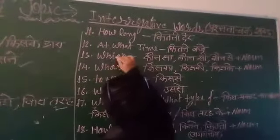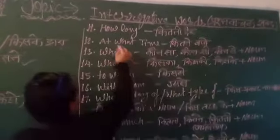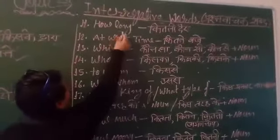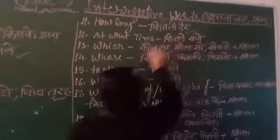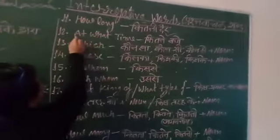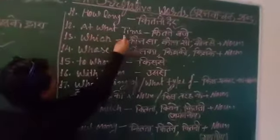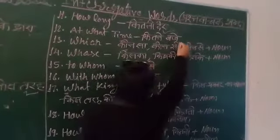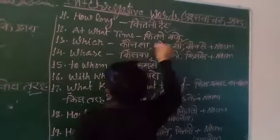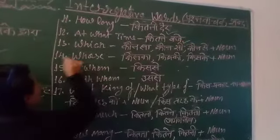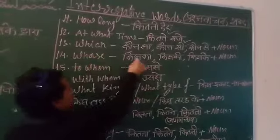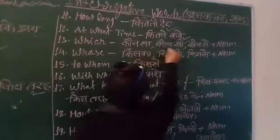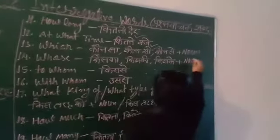Then the next word is 'How long' — 'How long' means Kitni der. Next word is 'At what time' — means Kitne baje. Next word is 'Which' — 'Which' means Kaunsa, Kaunse.